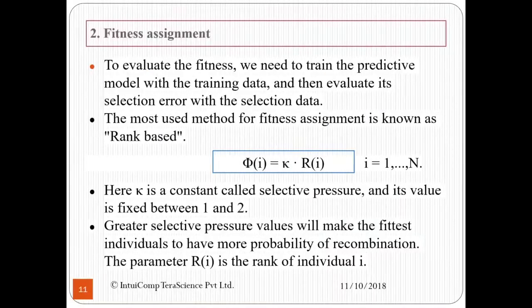Next, we come to the step of fitness assignment. To evaluate the fitness, we need to train the predictive model with the training data and then see how well it is doing by finding out the error with the selection data. The most used method for fitness assignment is known as rank-based selection, where fitness is defined as Φ(i) = κ · R(i), i going from 1 to N. The fitness of i is defined as κ multiplied by its rank R.